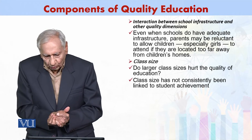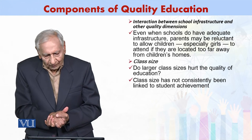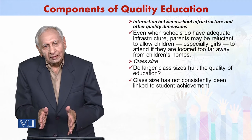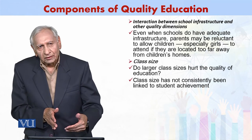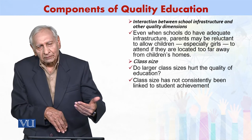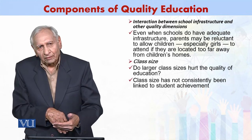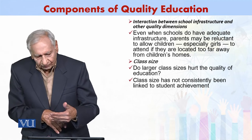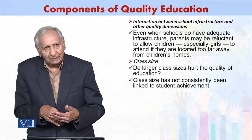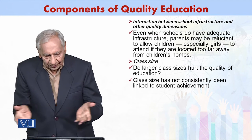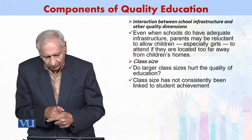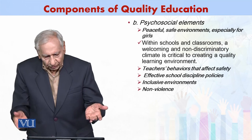There is an interaction between school infrastructure and other quality dimensions. Even when schools have adequate infrastructure, parents may not be happy to send their children there. There can be apprehensions — distance to school can be a problem, particularly for girls. Class size is also a factor; larger class size can have a negative impact on quality of education and student achievement.